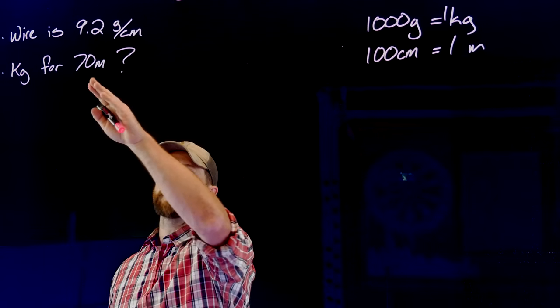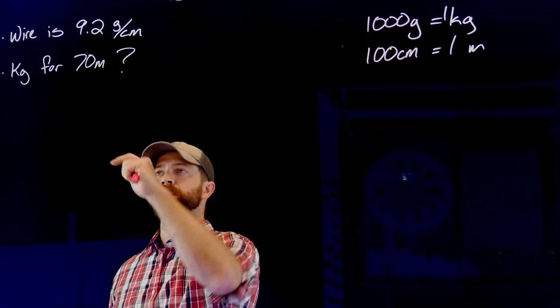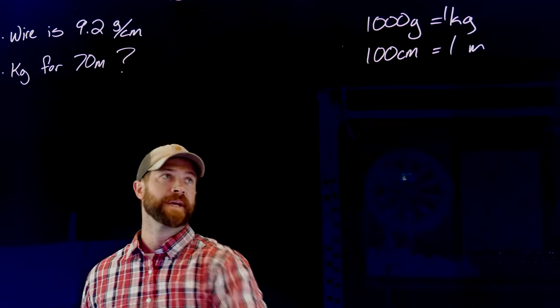Alright, here we have a wire that is 9.2 grams per centimeter and we are asked how many kilograms for 70 meters.